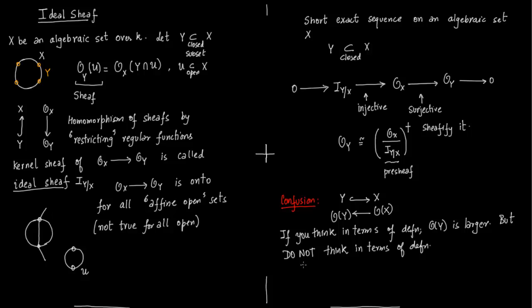And on affine open sets, the way we have defined functions on O of x, because you know some functions actually might not be defined on all of x but they are still in O of x. So the important point is that sections of O of y come all from O of x. So O of y is not larger than O of x. In fact O of x might have more functions than O of y.